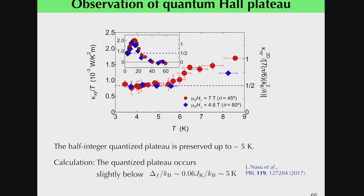This is the temperature dependence in the plateau regime. The plateau is preserved up to 5 K, increases with increasing temperature, and disappears at about 60 K, which is close to the energy scale of the Kitaev interaction. This is consistent with the expectation for Majorana fermions in the Kitaev model. According to theoretical calculations, this quantized plateau appears below the energy scale of the flux gap, estimated as ~5 K, consistent with the observations.